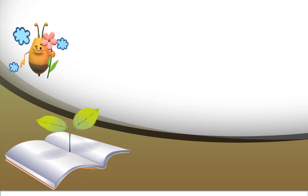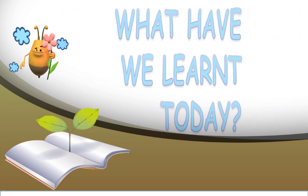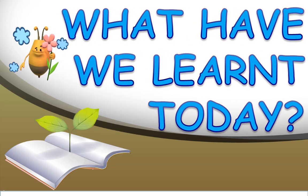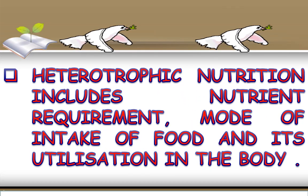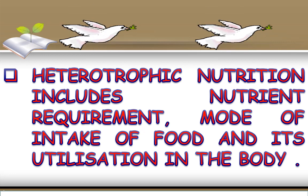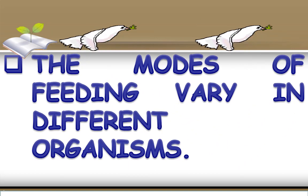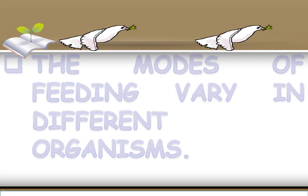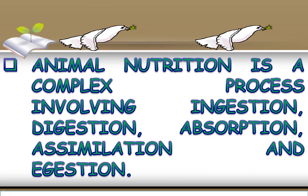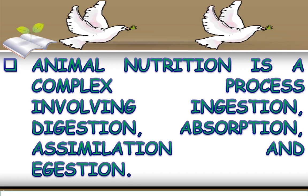It's time for you to note down the key points. What have we learnt today? Heterotrophic nutrition includes nutrient requirement, mode of intake of food, and its utilization in the body. The modes of feeding vary in different organisms. Animal nutrition is a complex process involving ingestion, digestion, absorption, assimilation, and egestion.